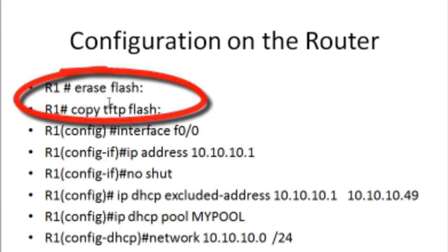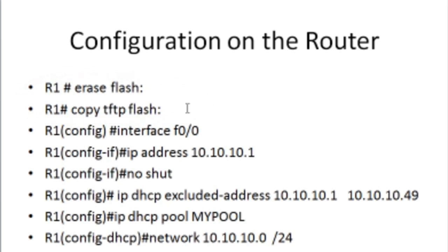First of all, what you need to do is erase the flash and then copy the flash. Set up a TFTP server that is going to be connected to your router, and from there you copy the flash to the router. The reason I'm advising you to do that is there is a flash problem with GNS3. If you don't do that, you're going to have problems. The router usually doesn't come with the flash file — like the image file. If you do a show flash on a GNS3 router it is usually blank.